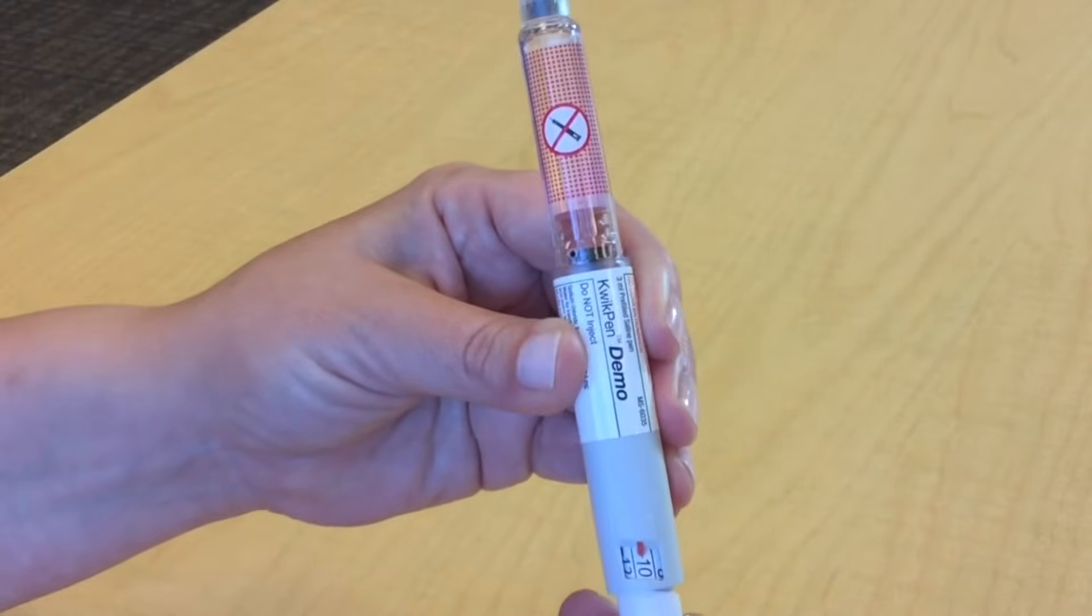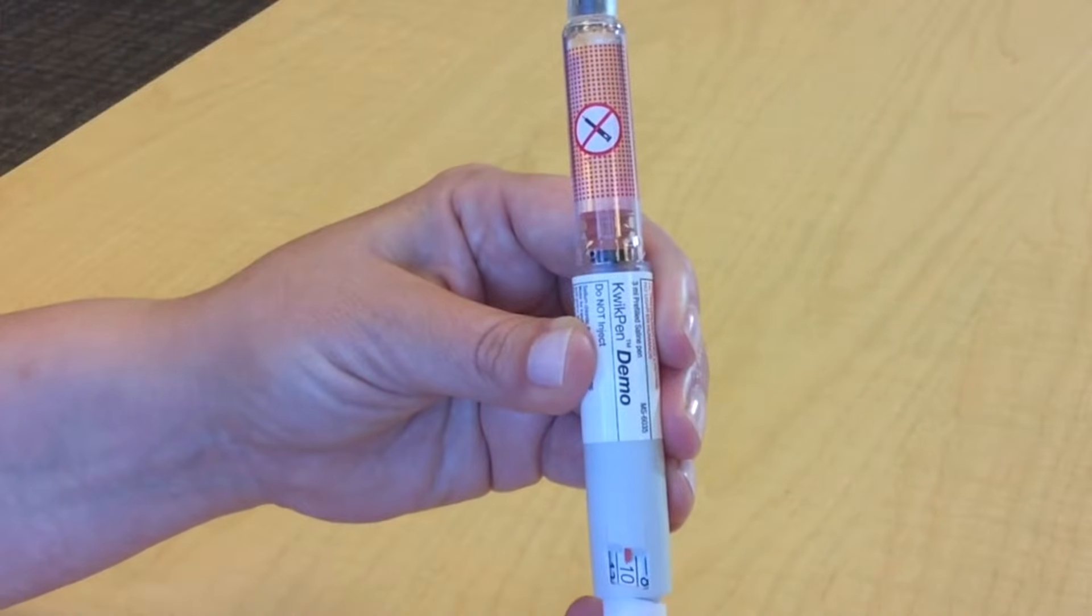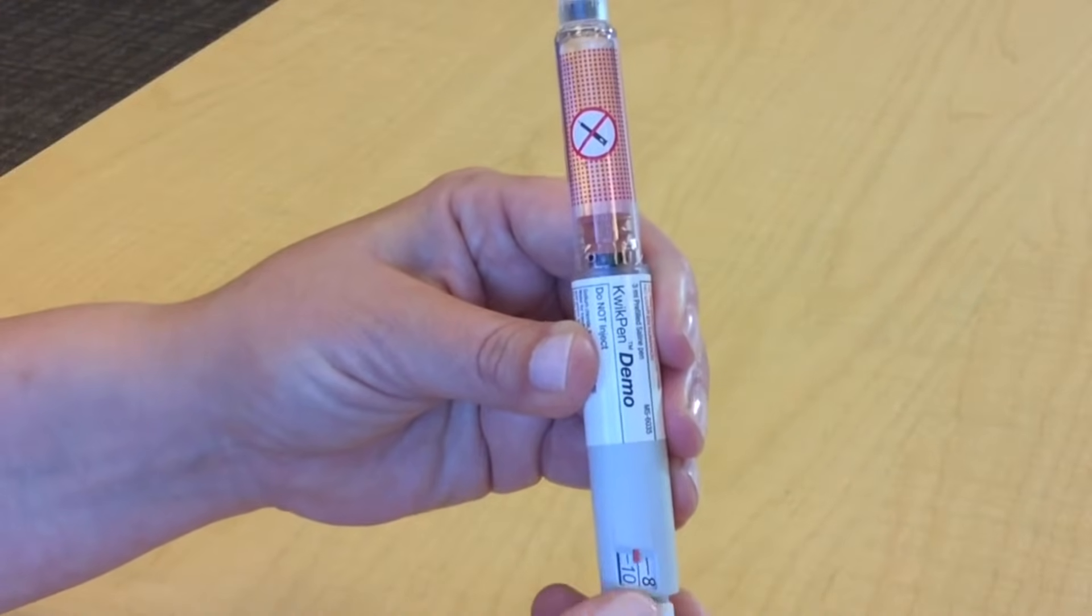If your dose is 10, line it up with 10. If your dose is in between the numbers, like 9, line it up in between.